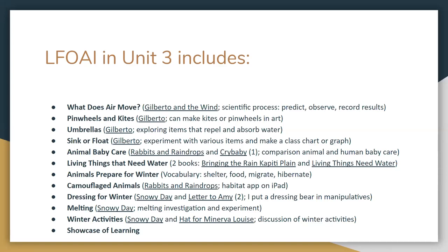Unit 3 also covers animal baby care, comparing how animal parents care for their young versus the baby in Crybaby (Unit 1). You read Bringing the Rain to Kapiti Plain — a curriculum favorite — and discuss living things needing water. You cover how animals prepare for winter: shelter, food, migration, and hibernation. Once children learn the word 'shelter,' they won't stop using it — they go home saying 'This is our shelter!'